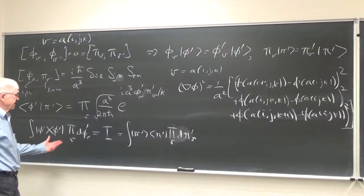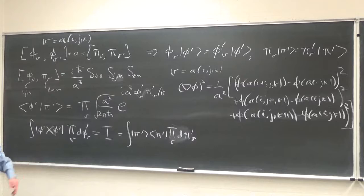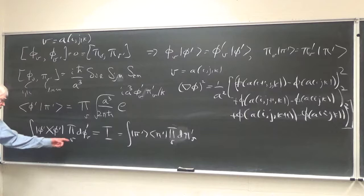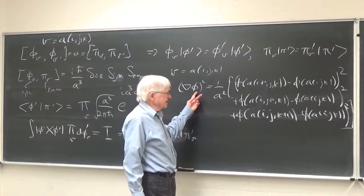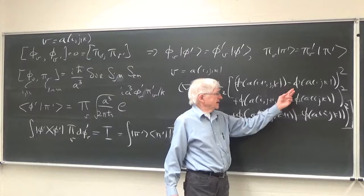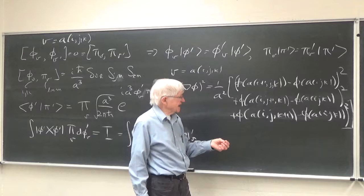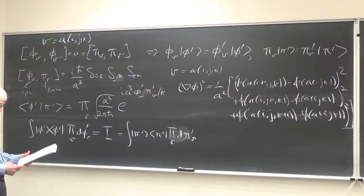They have commutation relations that imitate those of the continuum. Instead of i-h-bar times delta function, we have a product of delta functions divided by the cube of the lattice spacing — thinking in terms of three dimensions. The vertex is the lattice spacing times a triplet of integers. The inner product of two of these eigenvectors is a product over all the spatial vertices of phase factors that imitate what happens in the continuum.